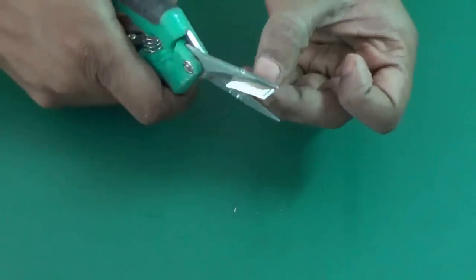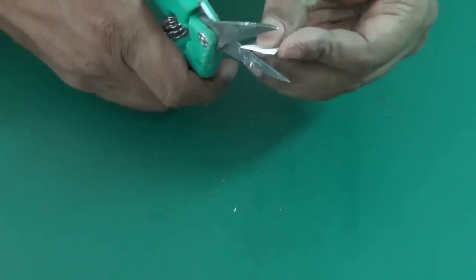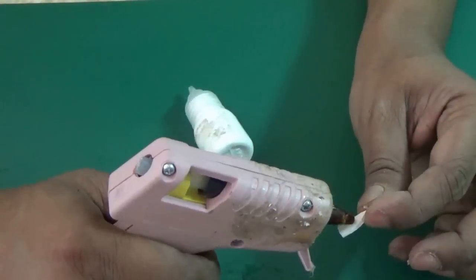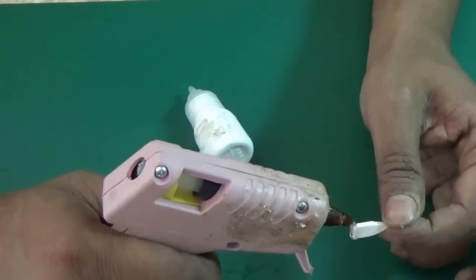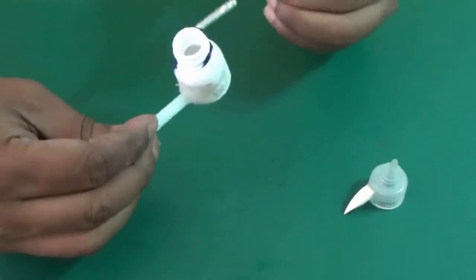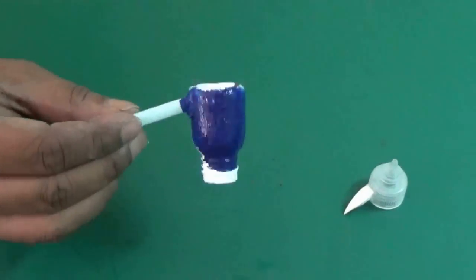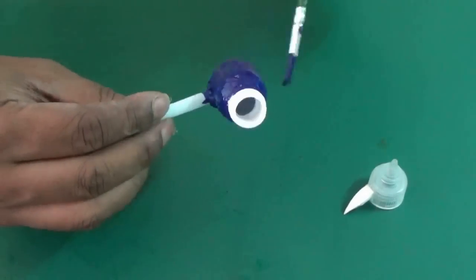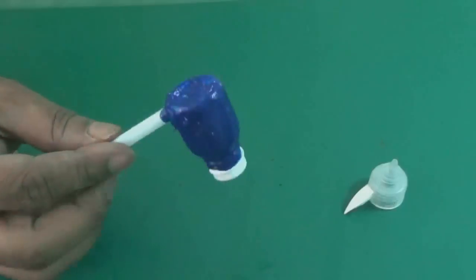Now let's decorate it. Cut a plastic piece to make the beak of the bird and then paint it as you want. Paint with acrylic color so that it doesn't get dissolved with water.